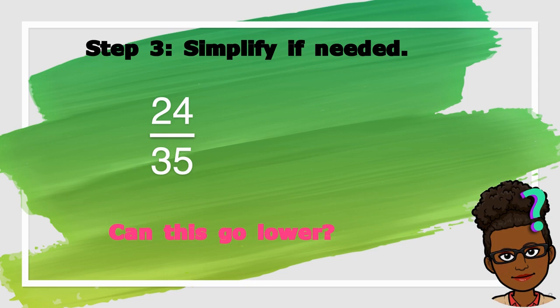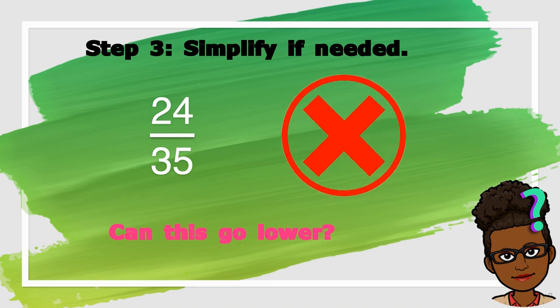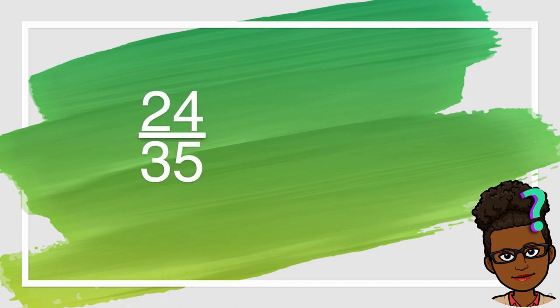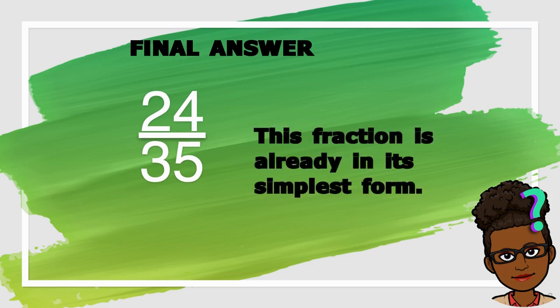Well, if we were to answer that question, our answer would be no. So, in order to simplify a fraction, there must be a number that will divide evenly into both the numerator and denominator so it can be reduced. And in this case, there is no number that will divide evenly into both 24 and 35. So, that means that our answer is 24 over 35. This fraction is already in its simplest form.